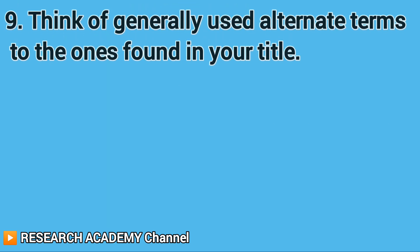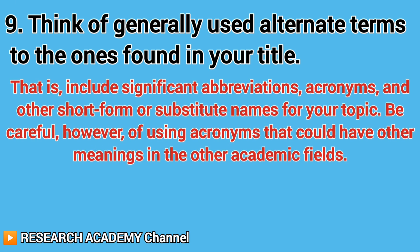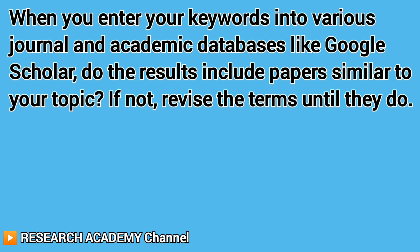Tip 9: Think of generally used alternate terms to the ones found in your title — that is, include significant abbreviations, acronyms, and other short form or substitute names for your topic. Be careful, however, of using acronyms that could have other meanings in other academic fields. Tip 10: Test your keywords before submitting your paper. When you enter your keywords into various journal and academic databases like Google Scholar, do the results include papers similar to your topic? If not, revise the terms until they do.